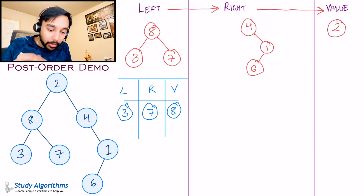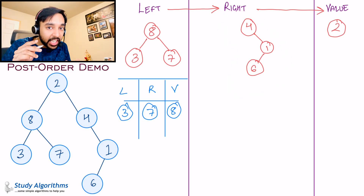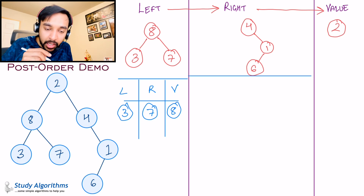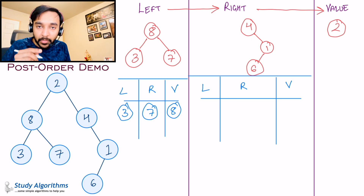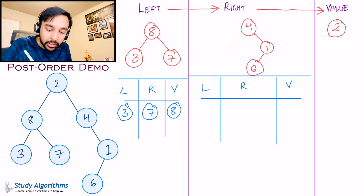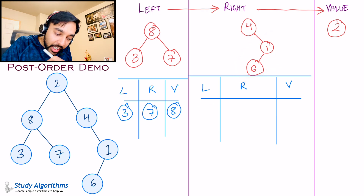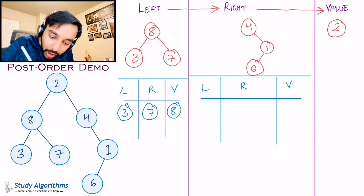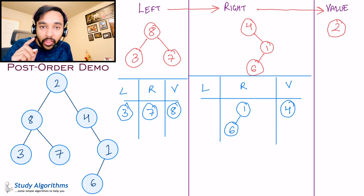Now move ahead to your right column. Once again, you have a complete tree, and we apply post-order traversal on it. You go in the order: left, then right, then value. You don't have anything on the left child, so you don't write anything there. On the right, you have a subtree, so I write down that tree in my right column. And for the value, I have the value 4, so I copy that into the value column. You have reached a single node for the value, so you stop there.